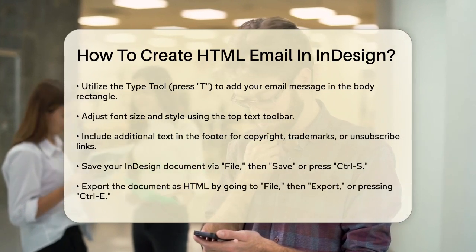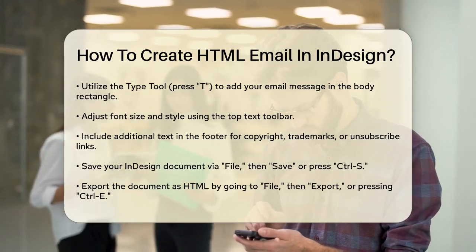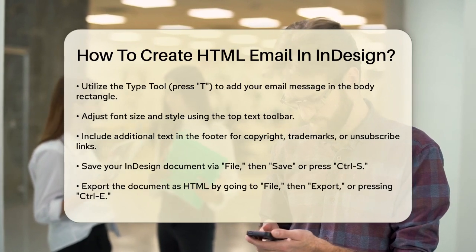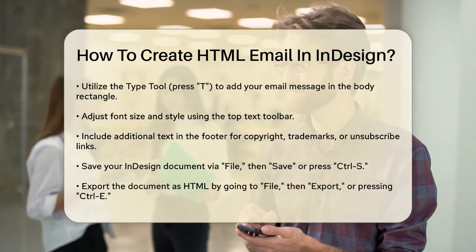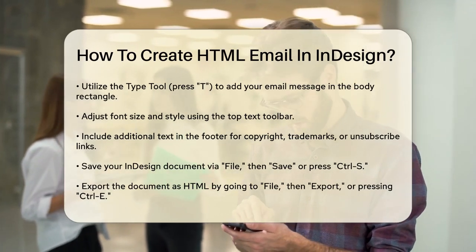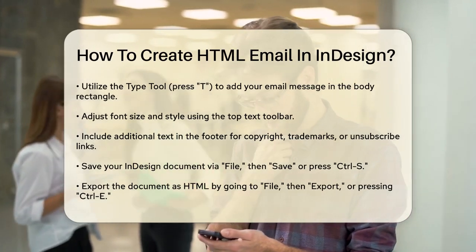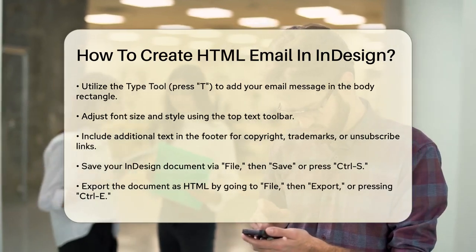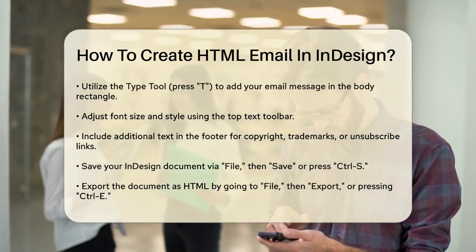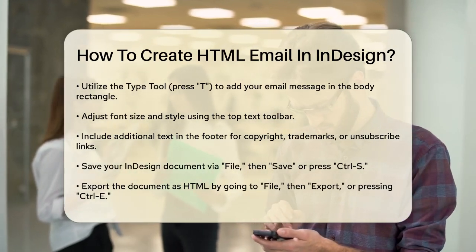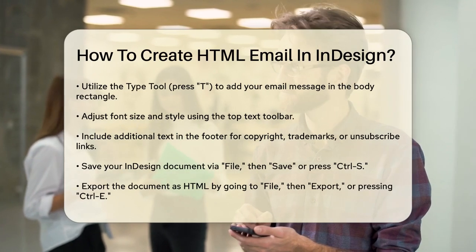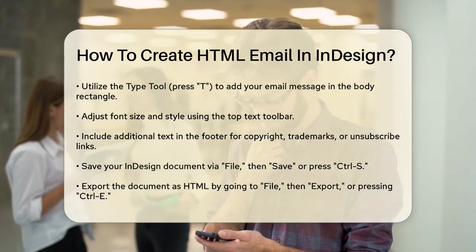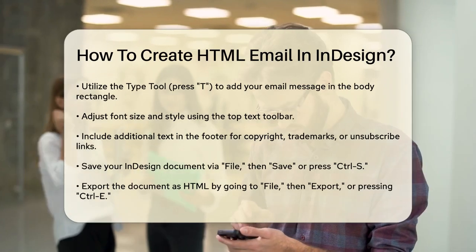Now, use the Type tool or press T to add text to your document. Click inside the body rectangle and enter your email message. You can adjust the font size and style using the tools in the top text toolbar. Add any additional text to the footer rectangle, such as company copyright information, trademarks, or unsubscribe links.